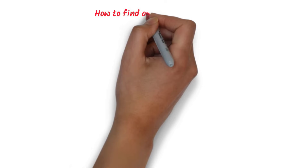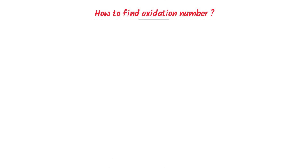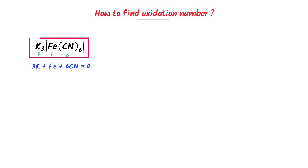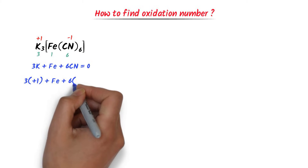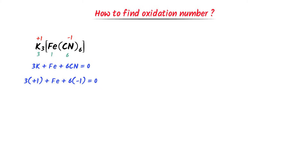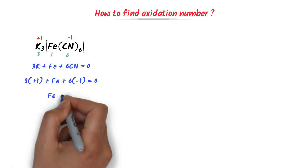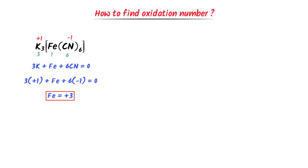Now, how can we calculate the oxidation state or oxidation number of a complex compound? Consider K3[Fe(CN)6]. There are three potassium atoms, one iron atom, and six CN ions. The total charge is zero, so: 3K + Fe + 6CN = 0. The oxidation state of potassium is +1 and that of CN is −1. So: 3(+1) + Fe + 6(−1) = 0, giving Fe = +3. The oxidation state of iron is +3.